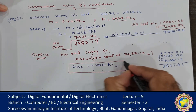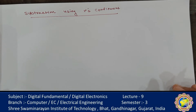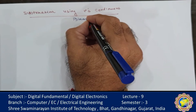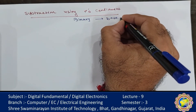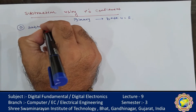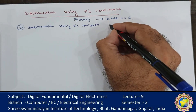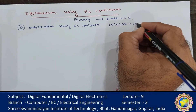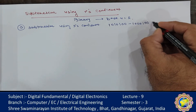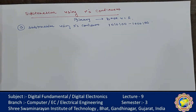This method is applicable in every number system. We started with the decimal number system; now let's apply it to binary. In binary, the base is r = 2, so it is known as subtraction using 2's complement. Example: subtract 1010100 minus 1000100 — both are 7-bit numbers so there is no need to add zeros.